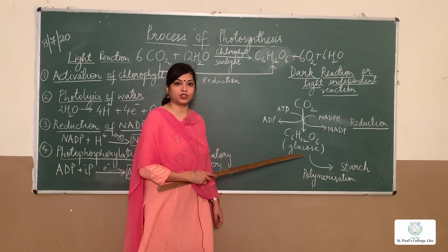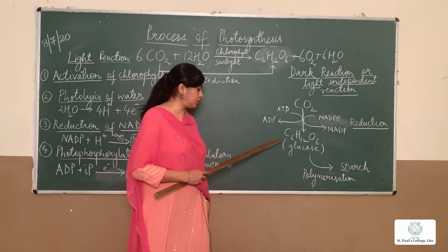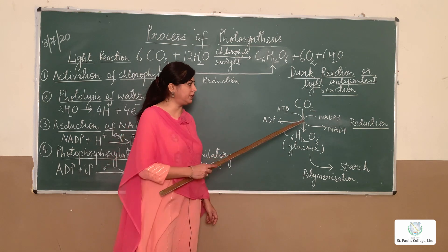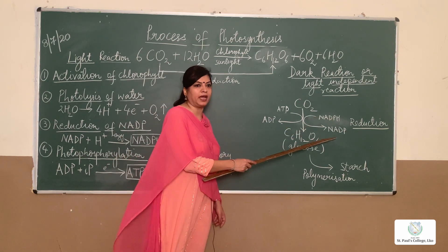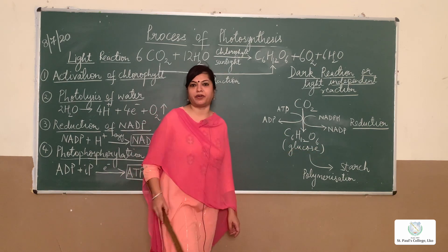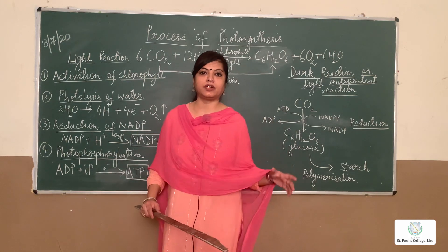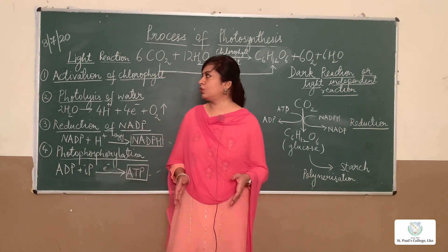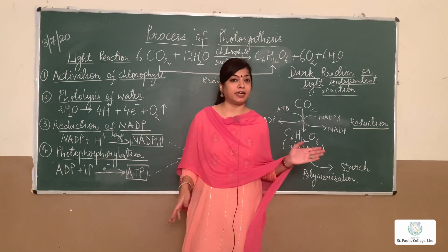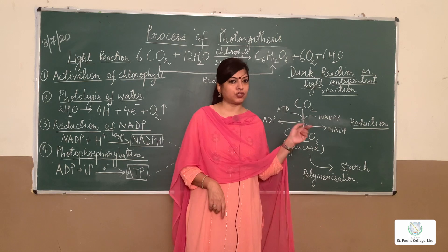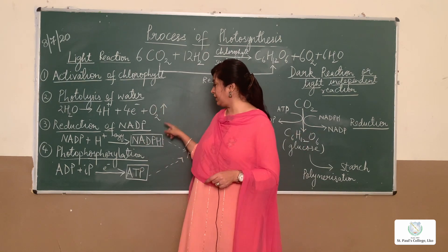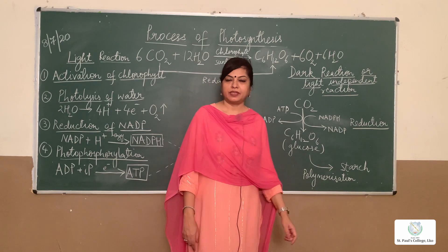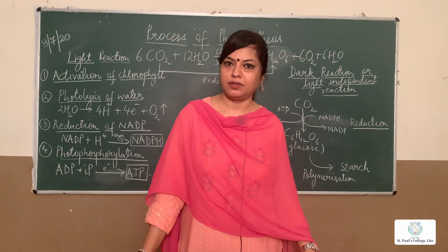In the dark reaction, carbon dioxide gets reduced to glucose using the two assimilatory powers — ATP and NADPH. ATP is converted back to ADP, and NADPH is converted back to NADP, which are then ready to participate again in the light reaction. It is a continuous cycle: light reaction followed by dark reaction. The site of light reaction is the thylakoid or grana, and the site of dark reaction is the stroma. End products of light reaction: oxygen, NADPH, and ATP; of dark reaction: glucose, ADP, and NADP.